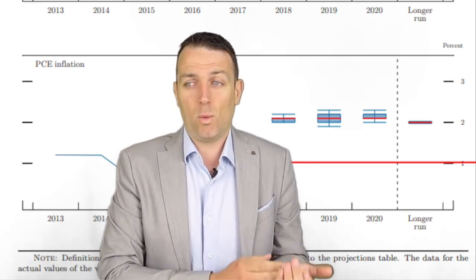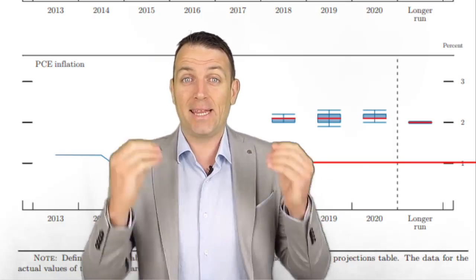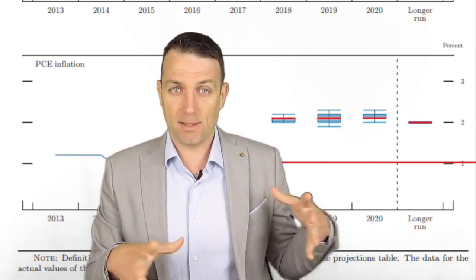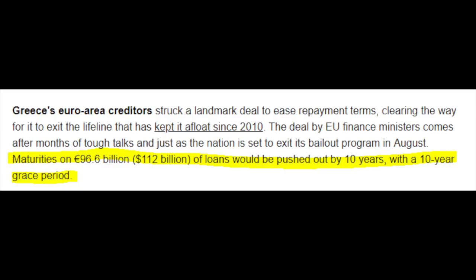Fiscal stimulus helps, but at some point there cannot be more stimulus because you have to think about the debt. As you can see here, Greece's euro area creditors struck a deal to ease repayment terms. Who is going to allow the US loans to be pushed out by 10 years with a 10-year grace period? The Fed can print their own money — it takes the ECB about three months to print the 96 billion to save Greece — but it's just something to keep in mind over the very long term regarding the sustainability of the situation.